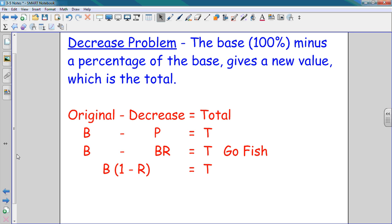Decrease is the exact same thing. I actually copied the notes page for the increase and just changed a couple words. The plus sign changes to minus. It's the base (100%) minus a percentage of that base, which is that P, gives you a new total. It's original minus your decreased amount. That's what you do when you have a sale - 20% off. You take the original price and subtract out whatever that percentage off is.